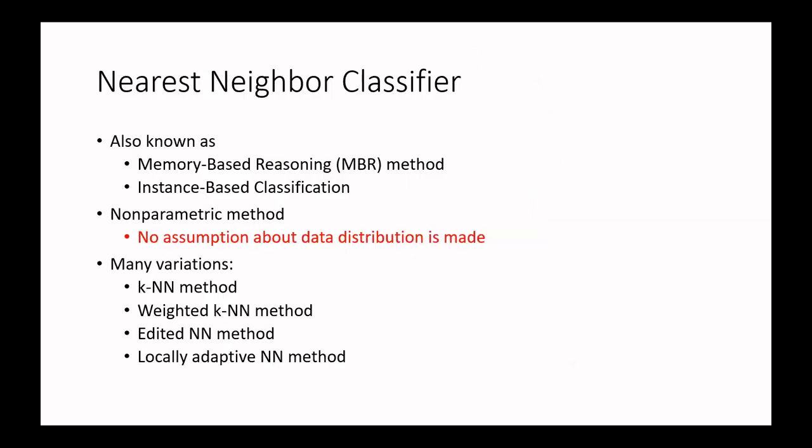This classifier is also known as the memory-based reasoning method, or MBR method. It is also known as instance-based classification. One important characteristic is that it doesn't make any assumption about data distribution — it's not bothered whether data is Gaussian or has any other kind of distribution.